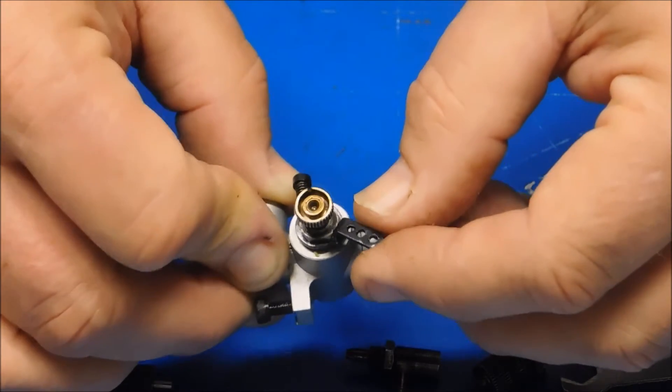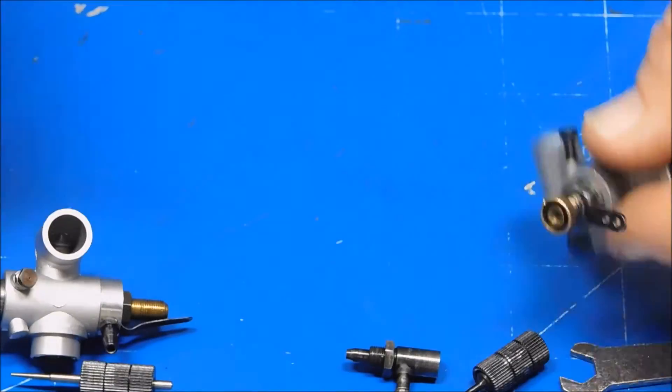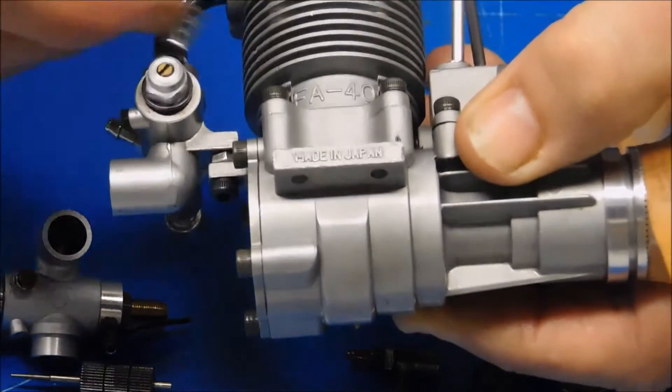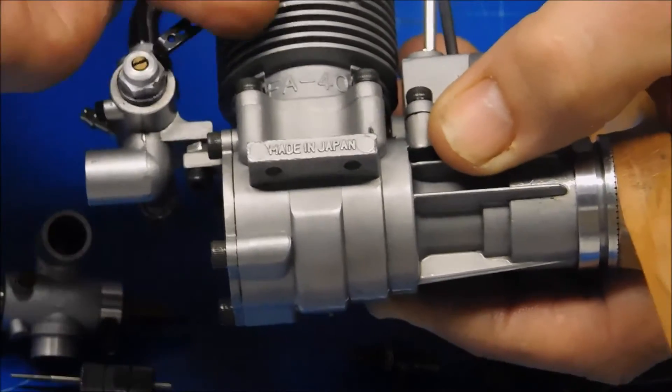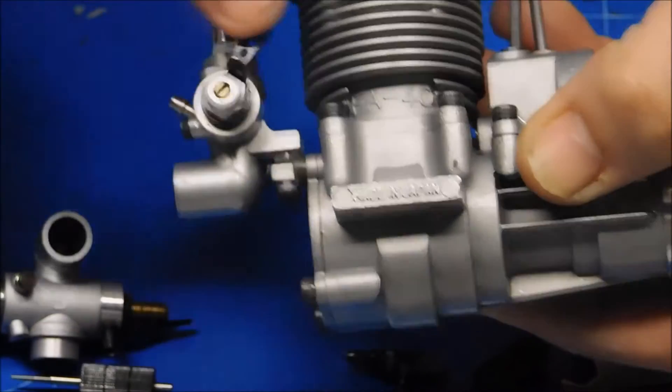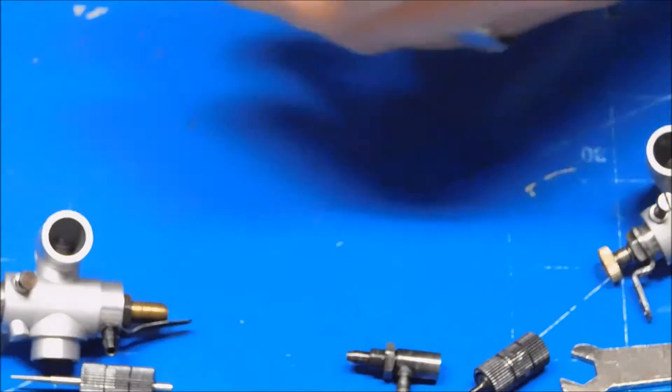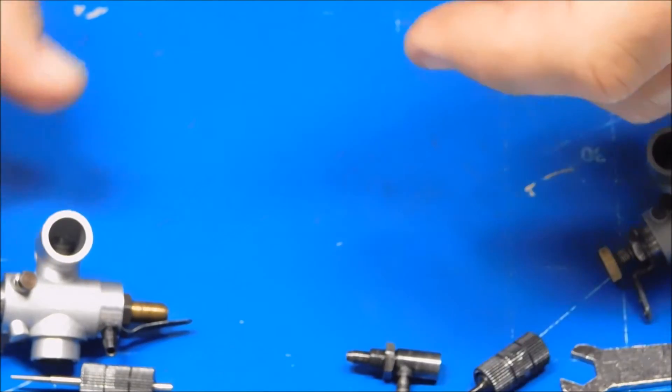Idle was never really a problem. I could get it low enough to idle and it would idle okay, but full throttle was never possible. But if you see this needle valve I've got here, or this carb assembly, I can use this full travel.